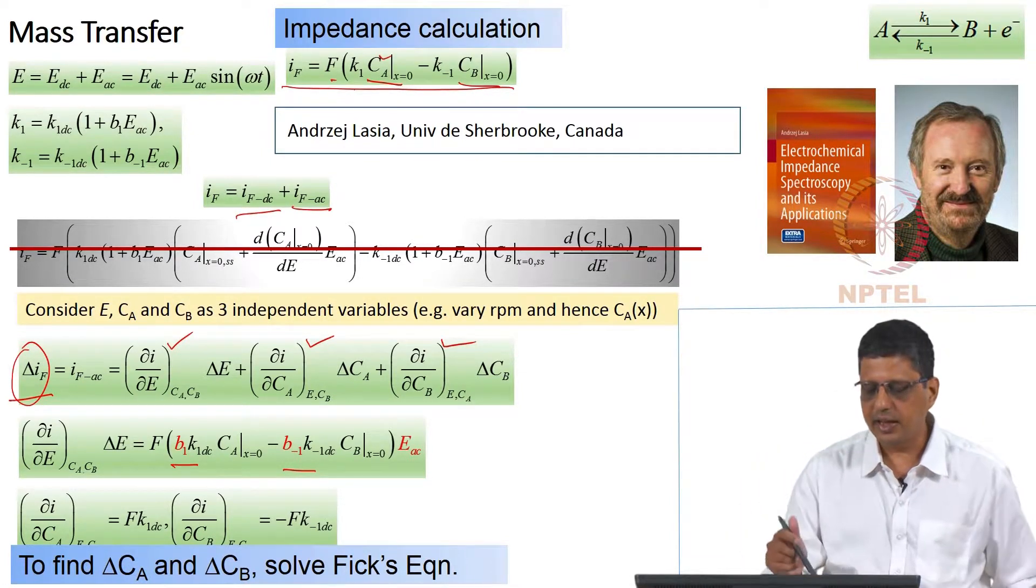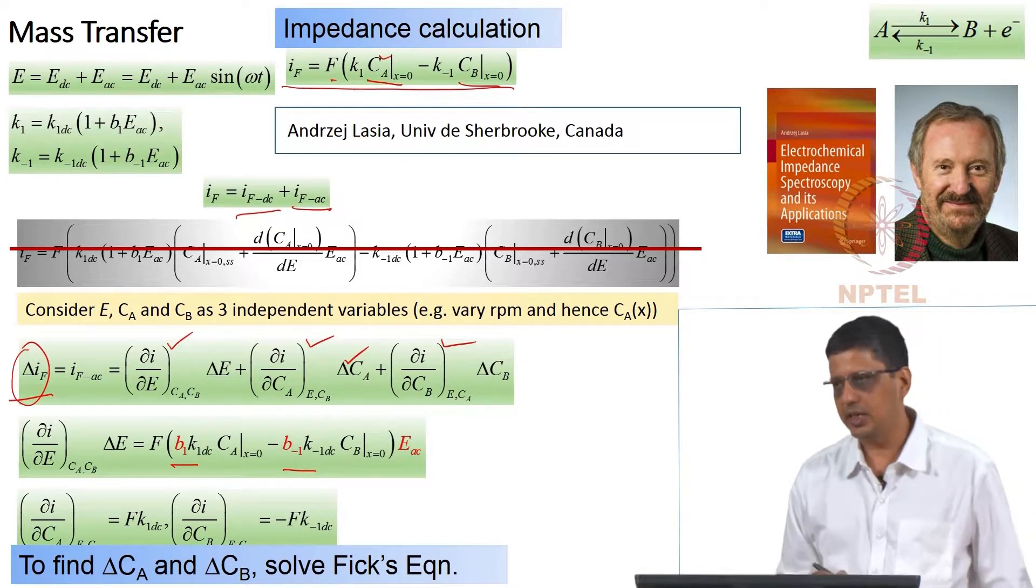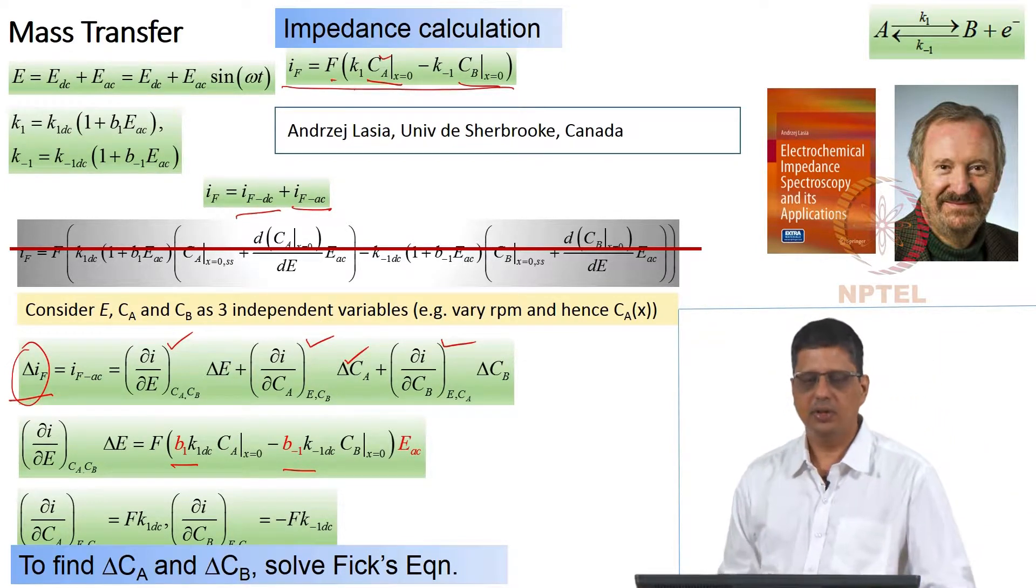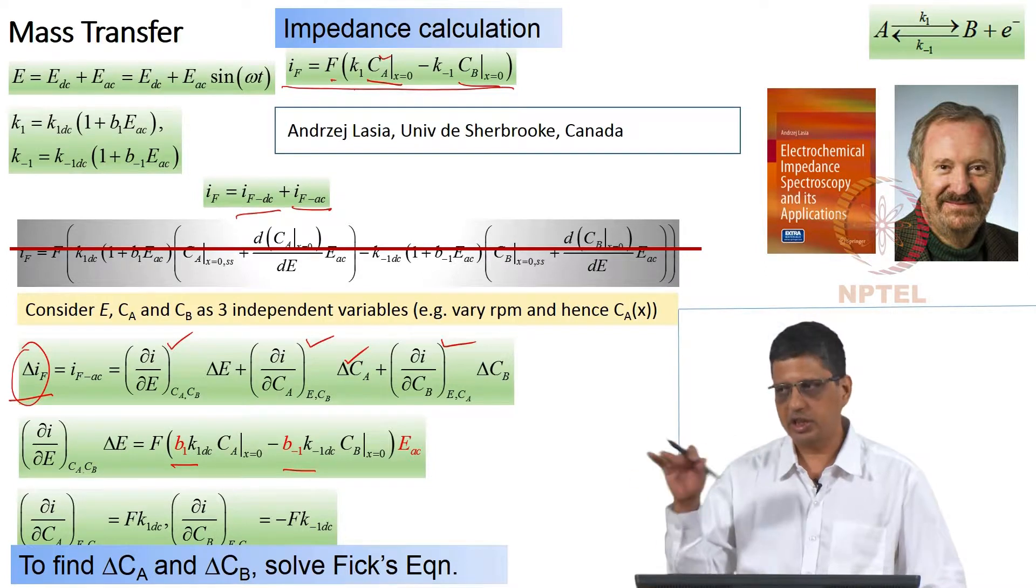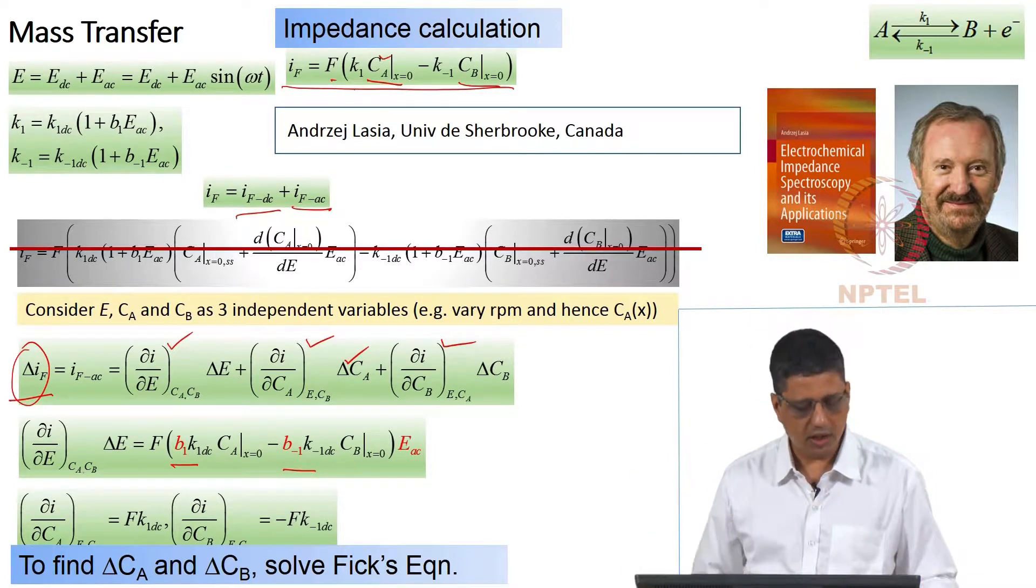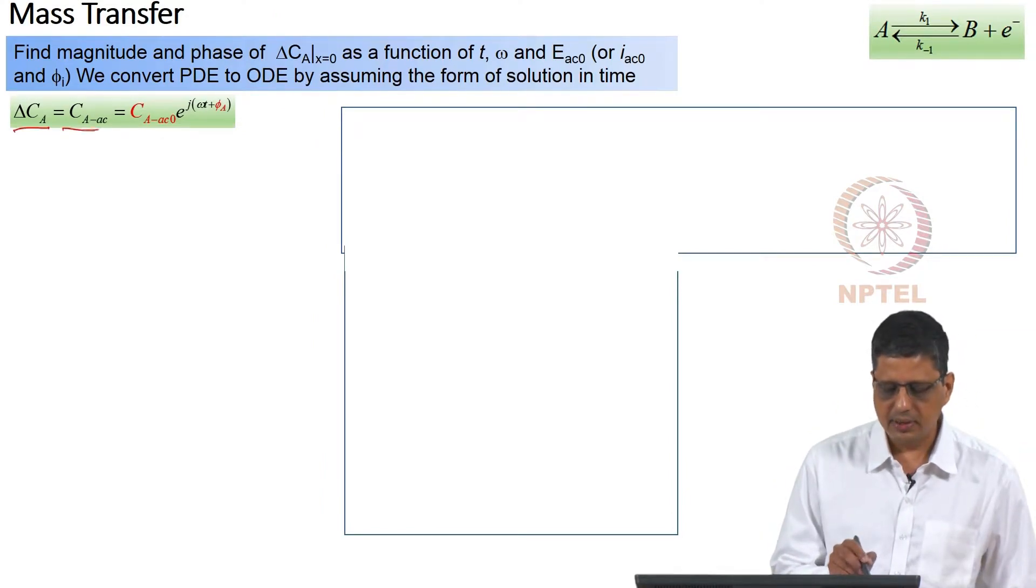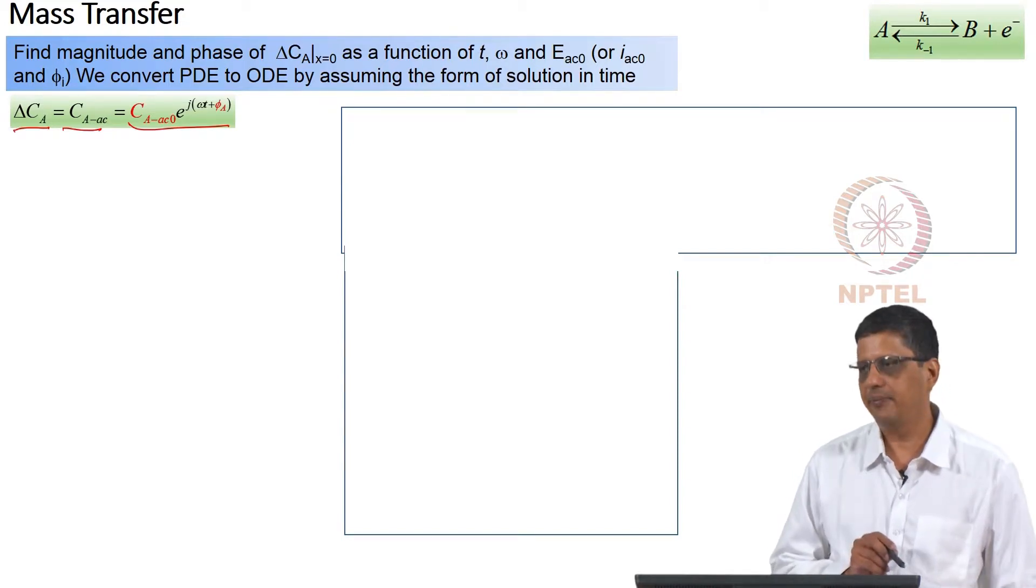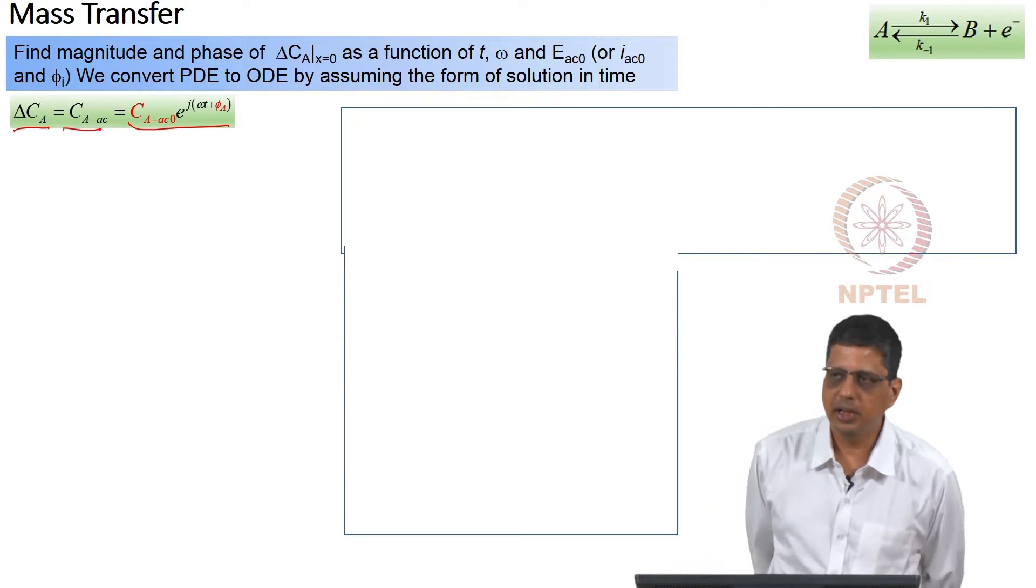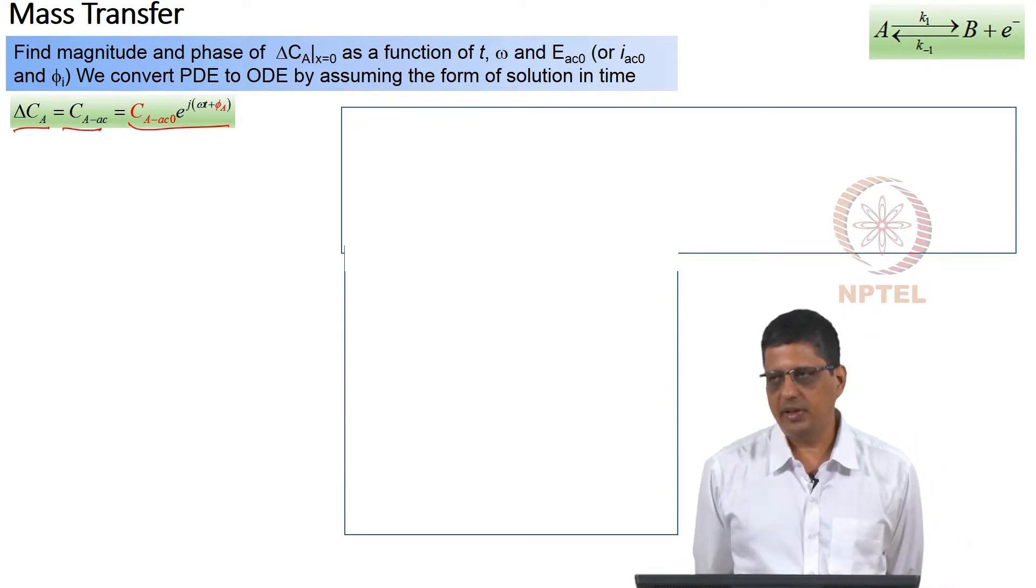So, what we want to do next is to find how the concentration oscillation is going to be related to the potential oscillation. In order to find this, we need to solve this equation. We write the concentration oscillation as C_A_AC and that in the complex notation is written as C_A_AC_0·e^(jωt+φ_A). So that means we are assuming after we apply a potential, wait for some time, you get a steady periodic response.